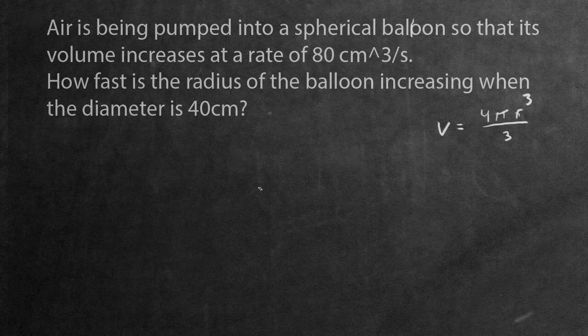So right when it hits 40 centimeters, how fast or what is the rate of radius change for the balloon? Let's first start by analyzing what kind of information we're given. The first thing I see is that we're given the volume. The volume increases at a rate of 80 centimeters cubed per second. This is a rate of volume change. So that in other words, this is going to be dV over dt.